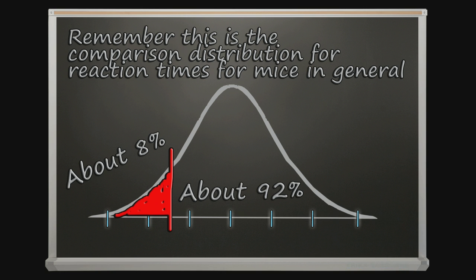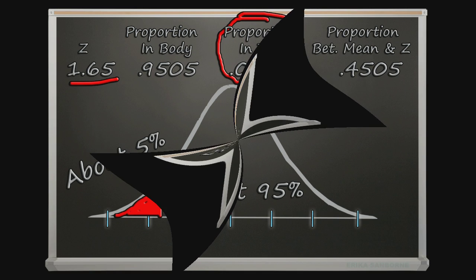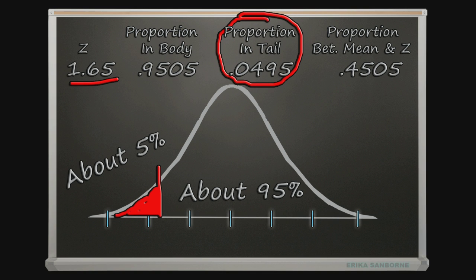In psychology, we usually use what's called the 5% level of significance, and that's a sort of cutoff, a line we draw. And beyond that line, we say, alright, if the sample score is this unusual, we're going to give some credit to the independent variable.